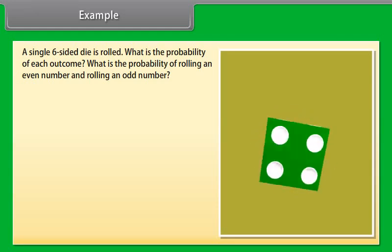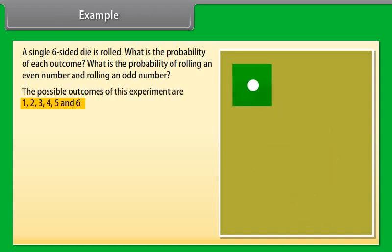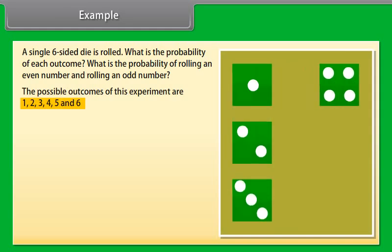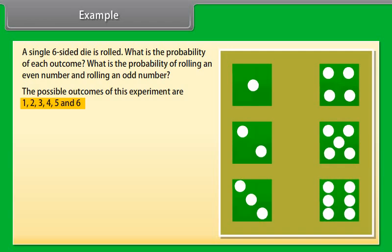A single six-sided dice is rolled. What is the probability of each outcome? What is the probability of rolling an even number and rolling an odd number? The possible outcomes of this experiment are 1, 2, 3, 4, 5 and 6.